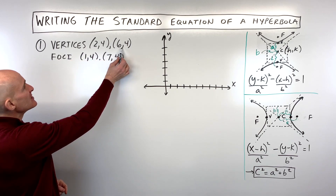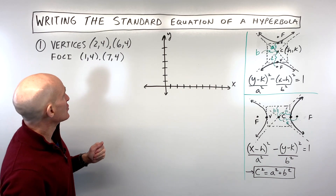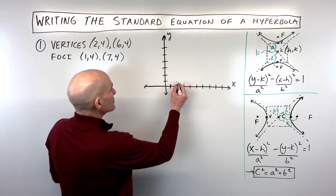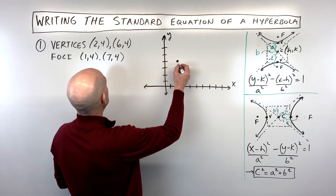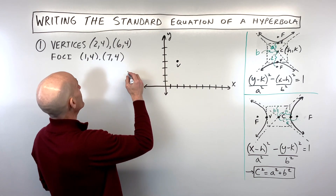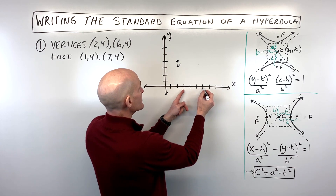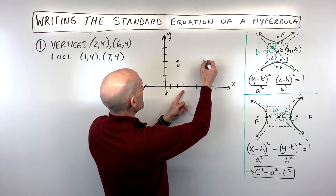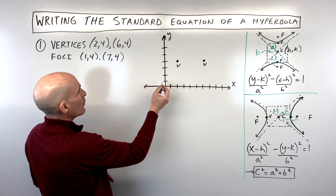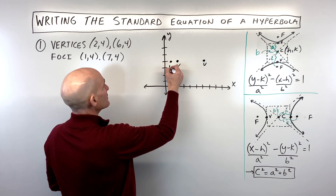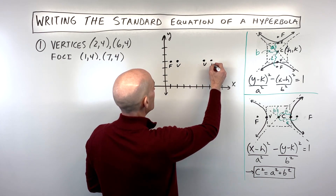We're given the vertices and the foci and we want to write the equation. I always recommend drawing a graph — it doesn't have to be perfect, just so you can see what's going on. Our vertices are at (2,4) and (6,4), and our foci are at (1,4) and (7,4).